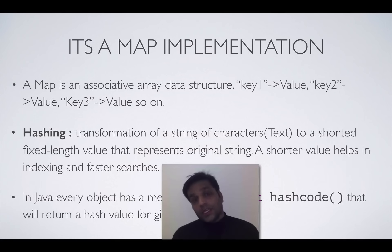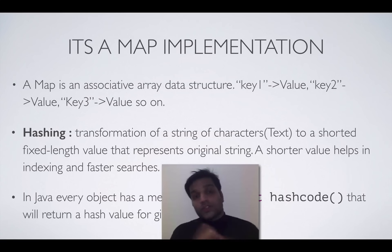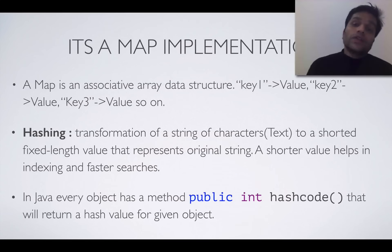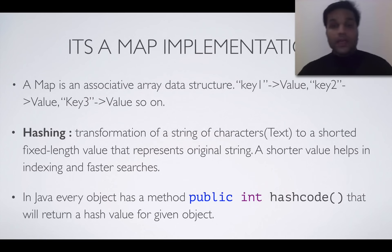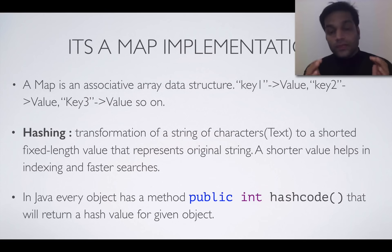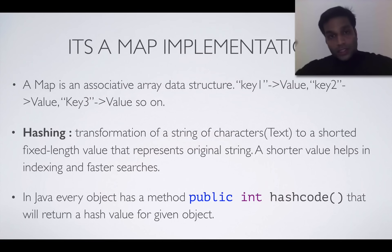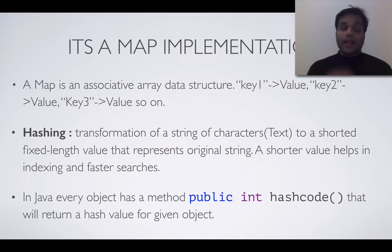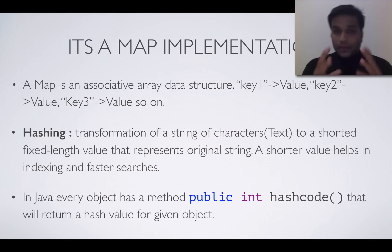HashMap is one of the implementations of the Map interface. It is called a HashMap because it is based on a technique called hashing. Hashing is a technique where you transform an object into a short, fixed-length representation — for example, a large string can be converted into a small fixed-length integer. This helps with faster indexing and lookups, though there are some catches we should be aware of.